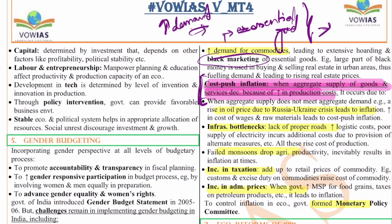Next is cost-push inflation, which means an increase in the cost of raw materials. The cost-push inflation occurs when the aggregate supply of goods and services decreases because of an increase in production cost. When aggregate supply reduces or aggregate supply cost increases, prices rise. Reasons include infrastructure bottlenecks — less infrastructure raises supply costs — taxation, and monsoon dependency: if there is improper monsoon, agricultural product supply falls. High taxation leads to increased prices at the raw material stage itself.